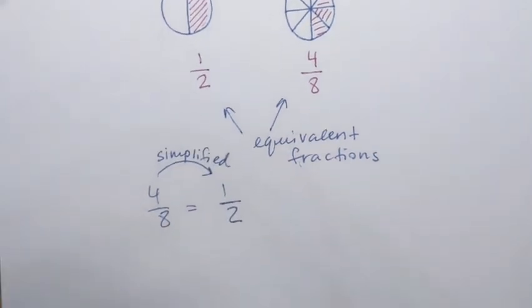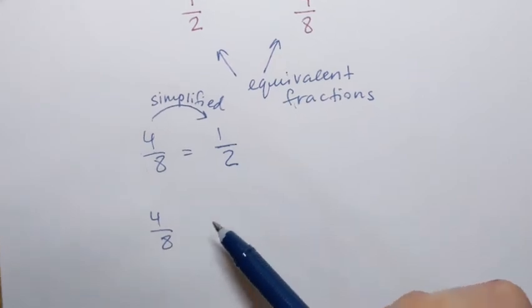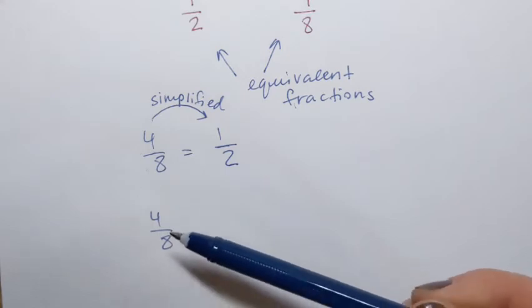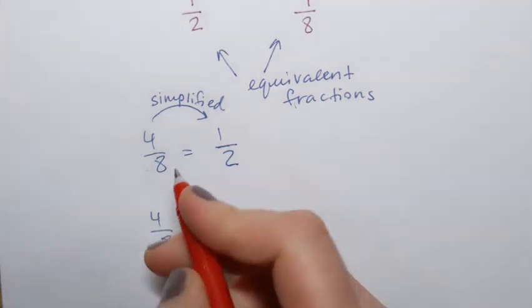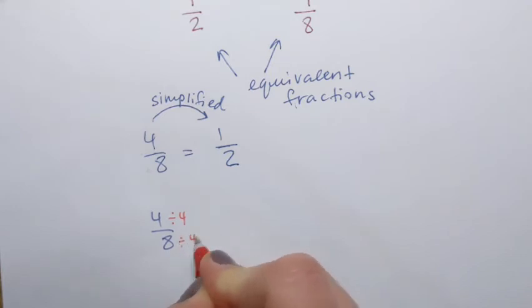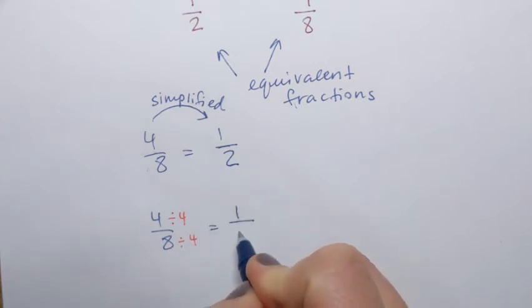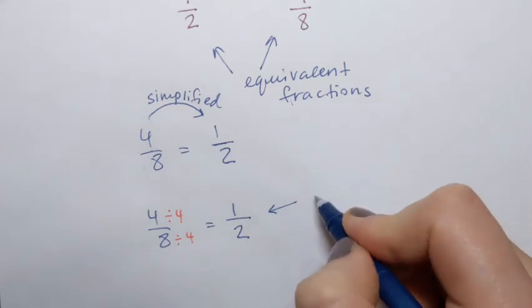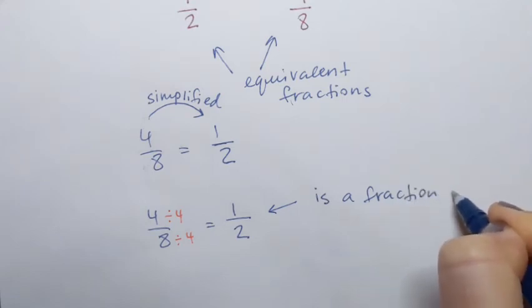To simplify a fraction, you have to find the largest number that divides both the numerator and the denominator. Here we have 4 and 8. We can divide both by 2 or by 4, but we need the largest number, which is 4. Dividing: 4 divided by 4 gives 1, and 8 divided by 4 gives 2. That's how we obtain one-half. We say that one-half is in lowest terms.